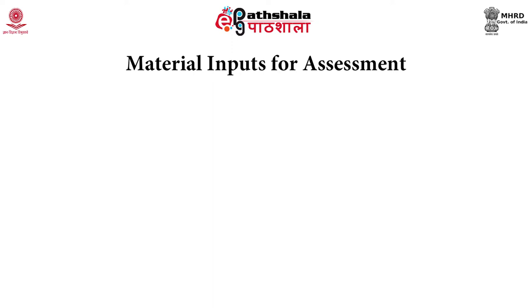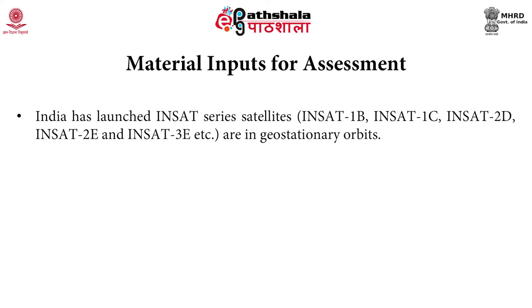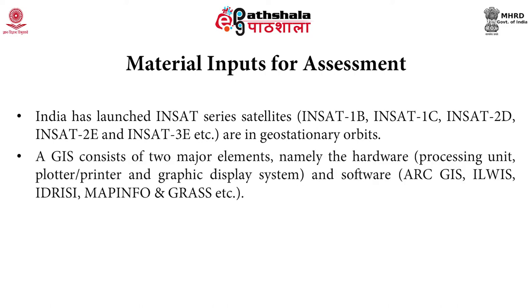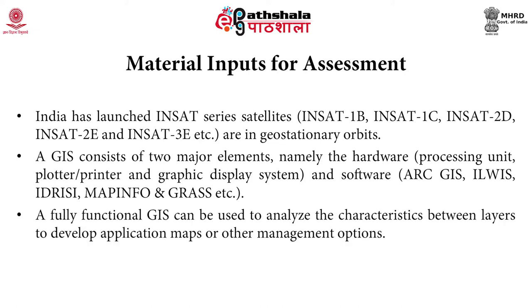What are the material requirements for carrying out these assessment studies? India has launched its INSAT series of satellites — 1B, 1C, 2D, 2E, and 3E — which are in geostationary orbits and continuously send us data for conservation of resources. GIS consists of two major components: hardware and software. The hardware includes a processing unit, plotter or printer, and graphic display system. The software includes ArcGIS, ERDAS, Idrisi, MapInfo, and GRASS. A fully functional GIS system can be used to analyze characteristics between layers to develop application maps or other management options.